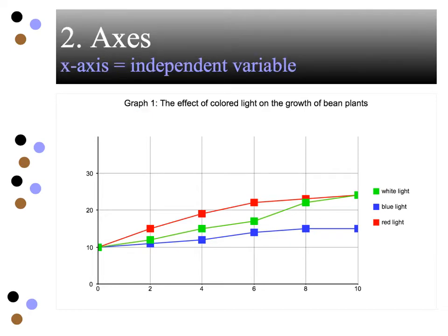We want to have axes where the x-axis is the independent variable. Now in mathematics, a lot of you are putting time on the x-axis, and generally speaking that's because time is often the independent variable. But as a scientist, you're going to be choosing what independent variable you want — for instance, with the termites, you might have had color or brand of pen. The x-axis is the independent variable. The y-axis then is going to be the dependent variable.